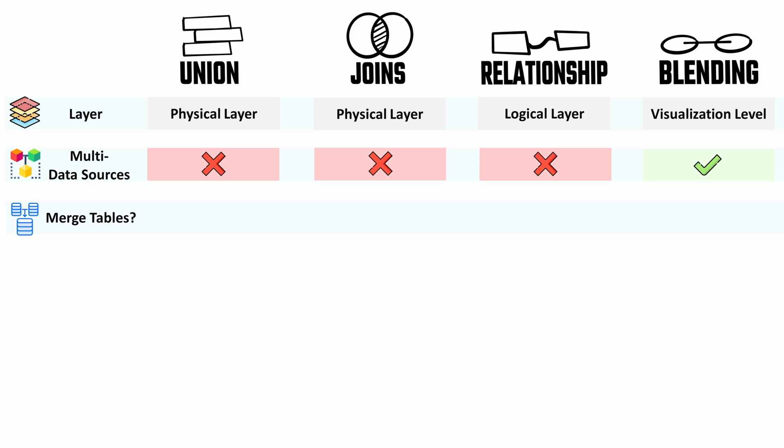The next point is whether the tables are going to be merged after using the methods. With unions and joins, the tables are merged and a completely new table is created. But with relationships and data blending, no new table is created.